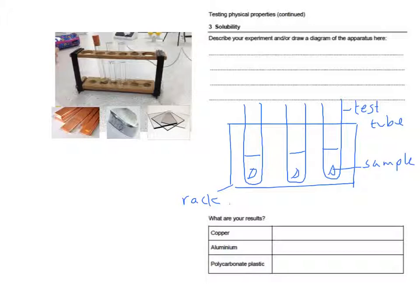Now, in this particular case, copper, aluminium and polycarbonate plastic are not soluble. So our results are pretty boring, really. It's always the same answer for those materials.